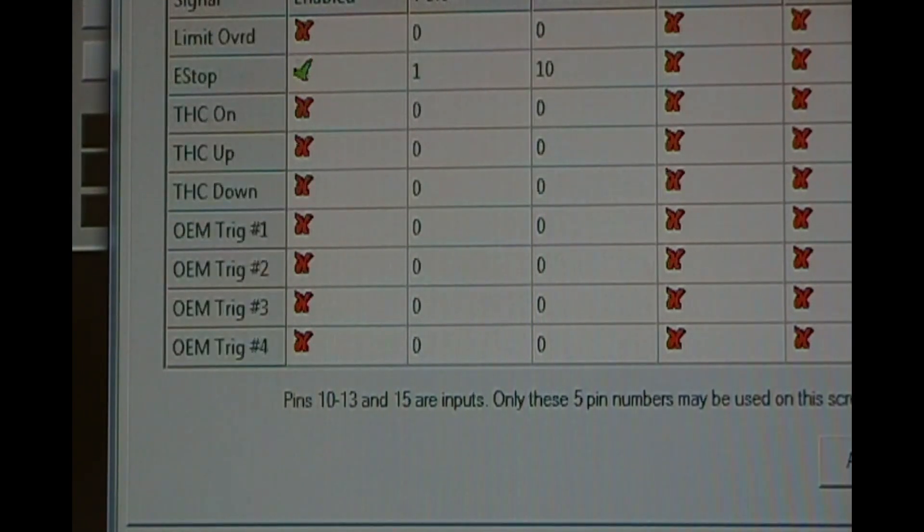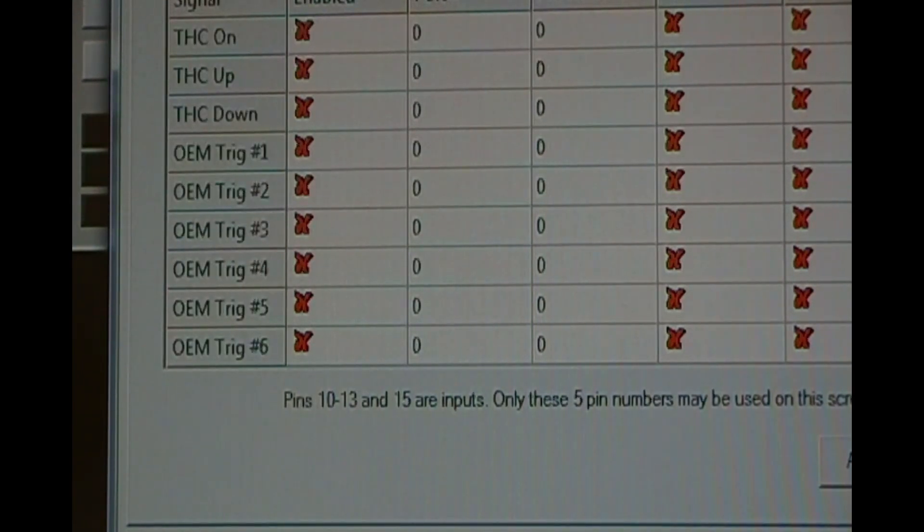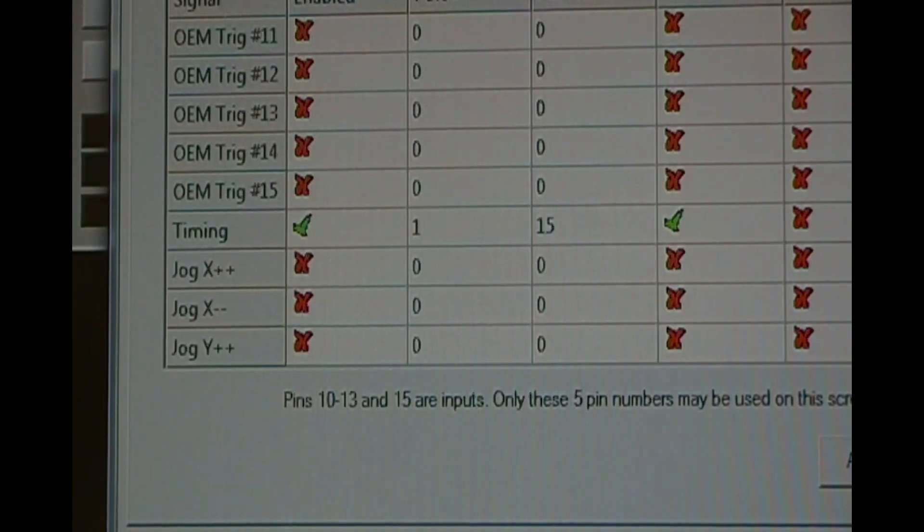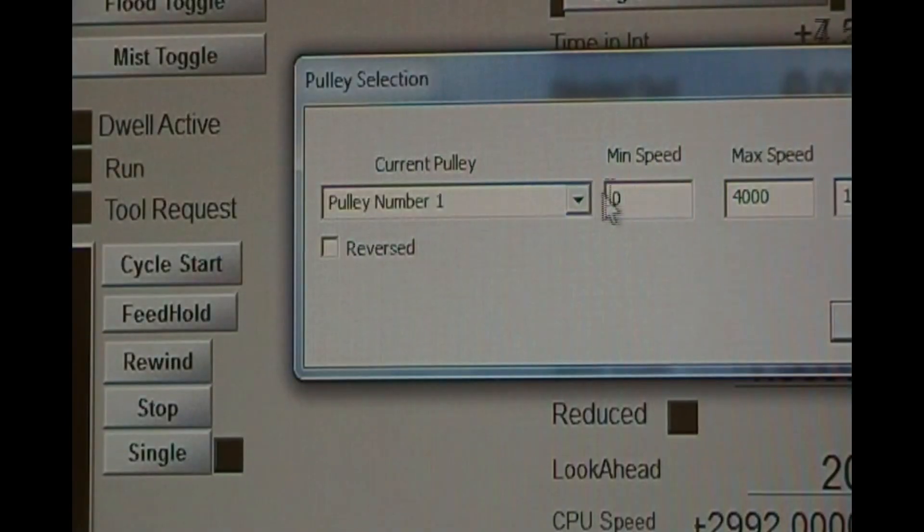Continue scrolling down until you see Timing. Again, Enabled, Check, Port 1, Pin 15, Active Low, Check, Not Emulated and No Hotkey. Click on OK, then Reset. I also configured my spindle pulleys to Maximum RPM 4000, Pulley Number 1 and Ratio 1.